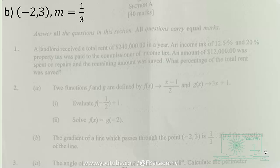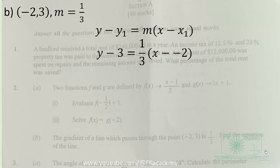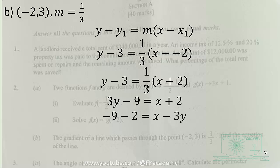For part (b), the gradient is 1/3 and the point on the line is (−2, 3). We recall the formula for finding the equation of a straight line and substitute. Multiplying through by 3 and grouping variable terms on the right and constant terms on the left gives us x − 3y = −11 as the equation of the straight line.